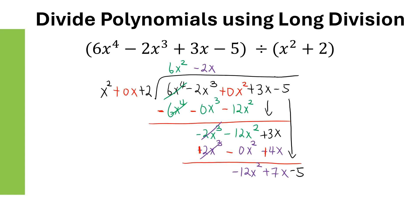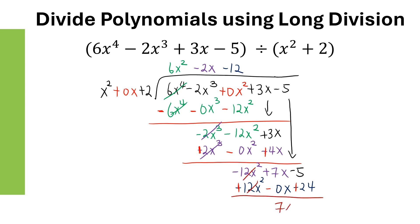Negative 12X squared divided by X squared gives negative 12. Multiply: negative 12 times the divisor gives negative 12X squared plus 0X minus 24. When we subtract, change all the signs: positive, negative, and positive. Negative 12X squared cancels out, giving a remainder of 7X plus 19. The final answer is 6X squared minus 2X minus 12, with a remainder of 7X plus 19 over the divisor X squared plus 2.